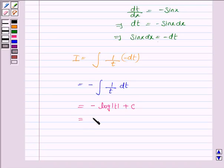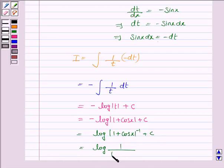Now t is 1 plus cos x. So this is minus log mod 1 plus cos x plus c. And this can be further written as log mod 1 plus cos x to the power minus 1 plus c. And this is further written as log 1 upon mod 1 plus cos x plus c.